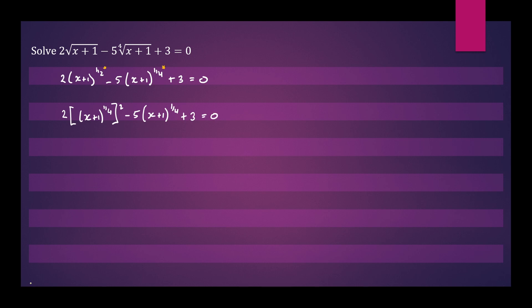This is quite convenient. Now we can make a substitution. So let u equal x plus 1 to the quarter. So that will give us 2u squared minus 5u plus 3 equals 0. We have a quadratic equation and we can solve it.